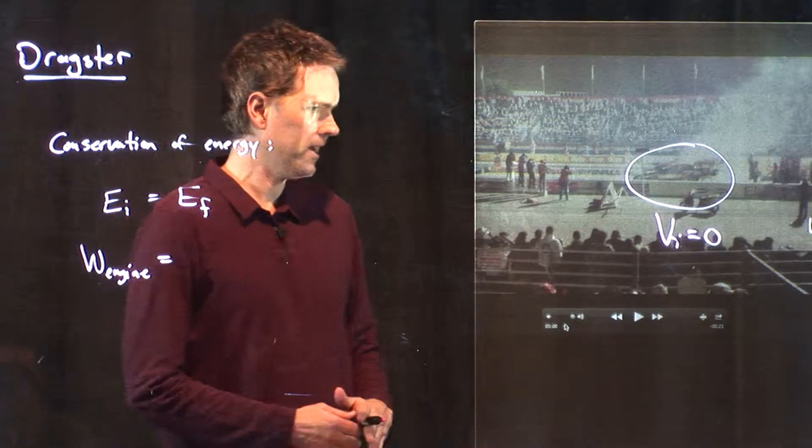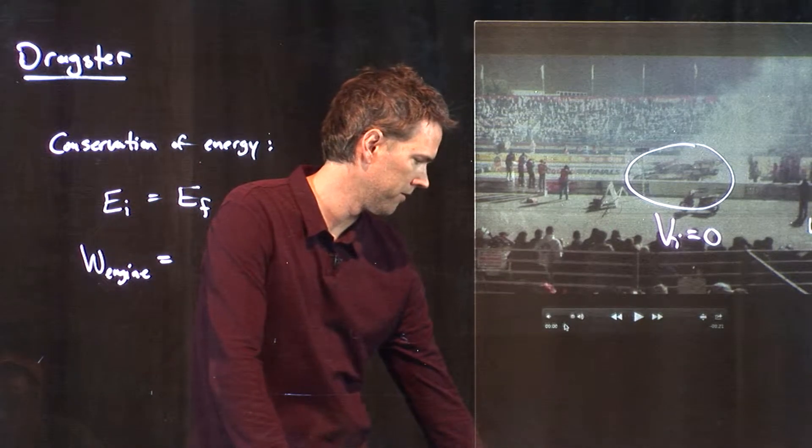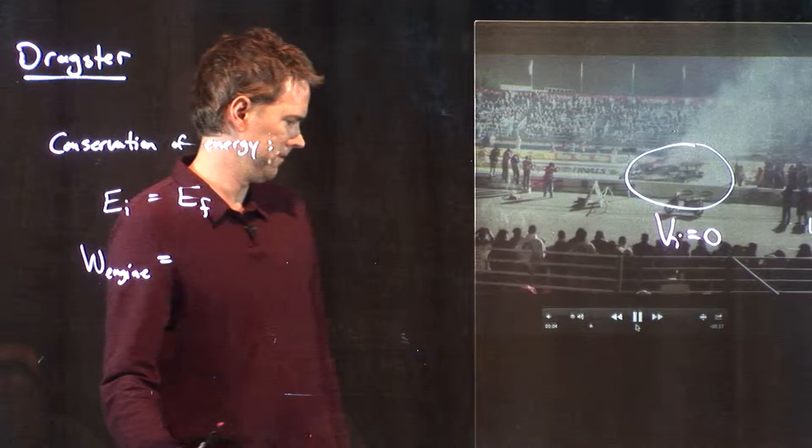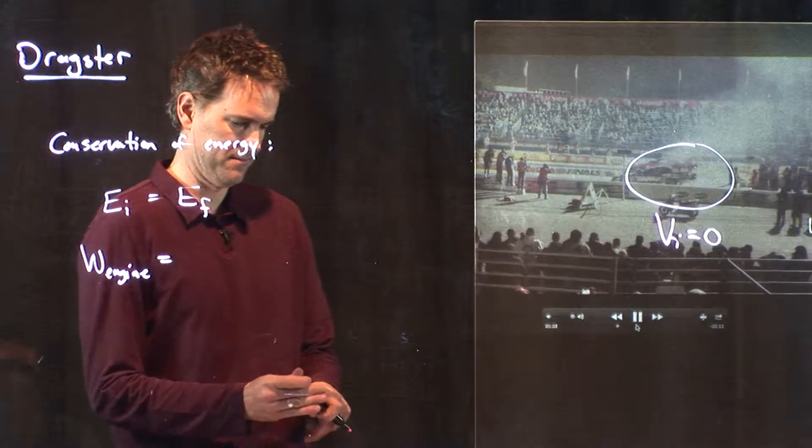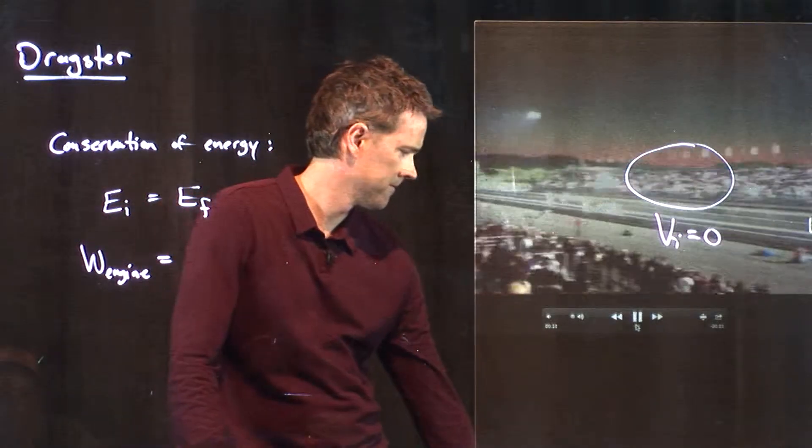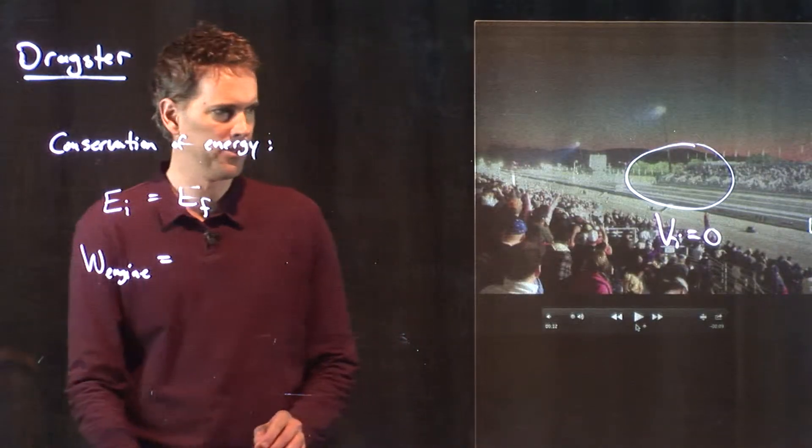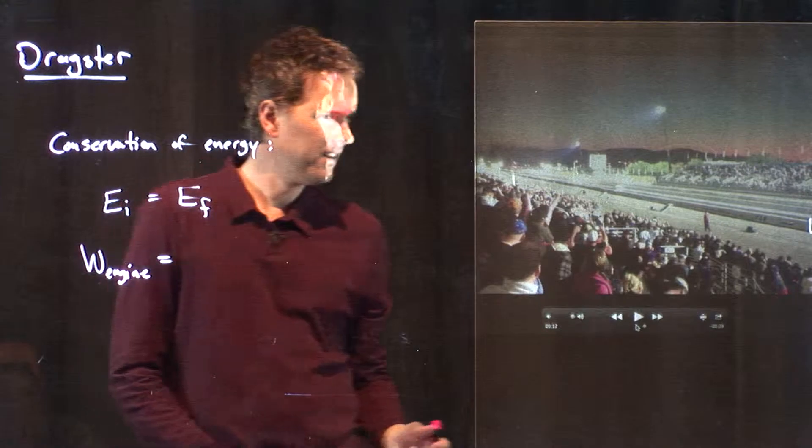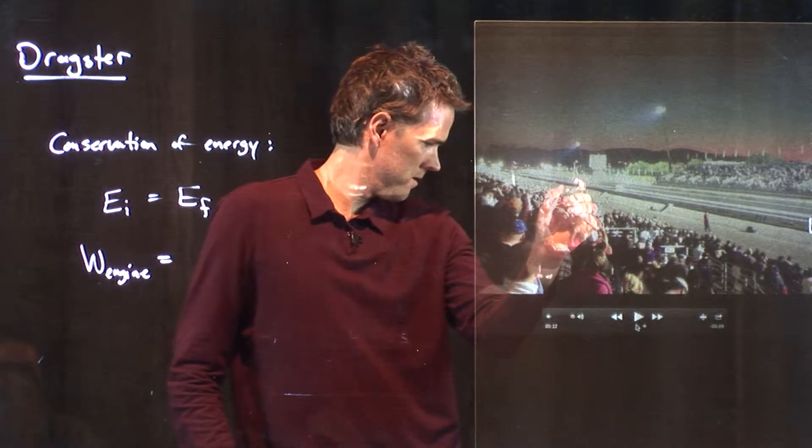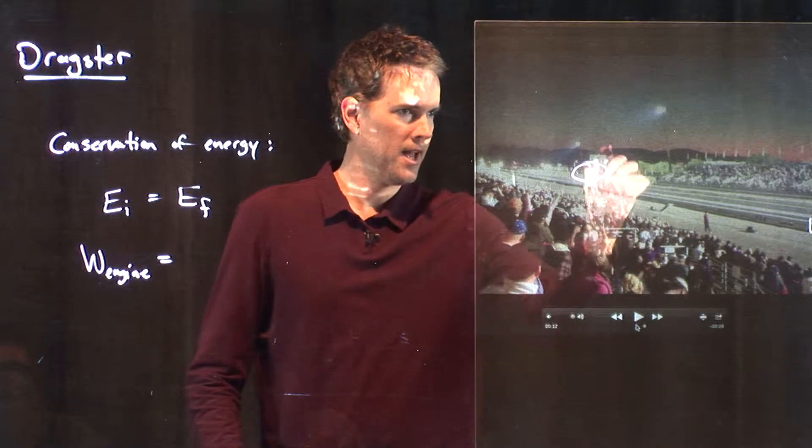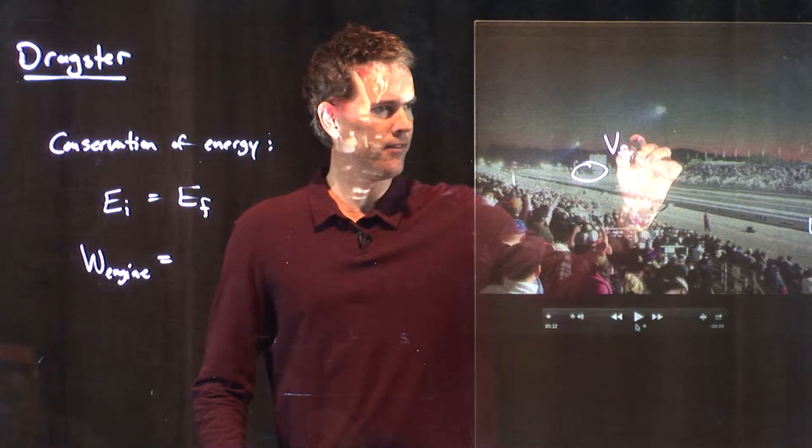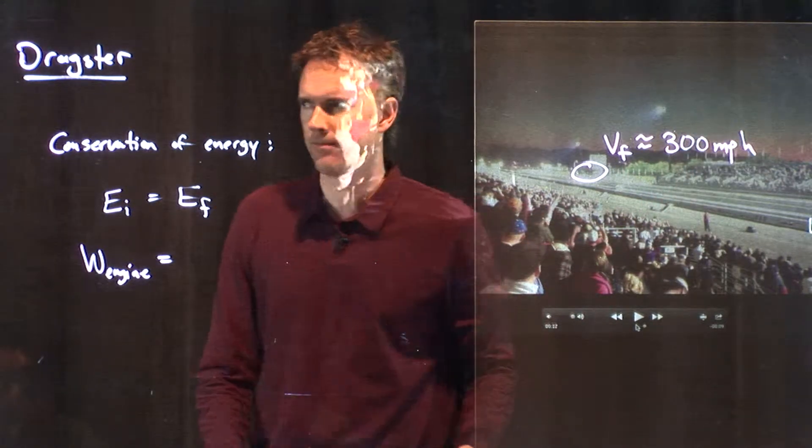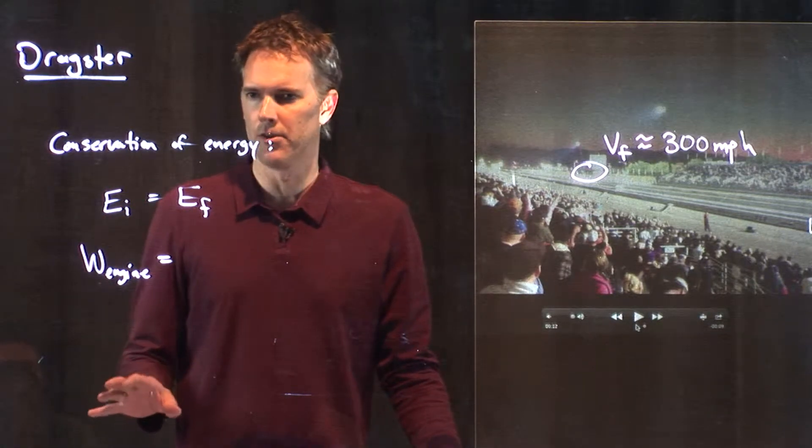And now, at the final picture, let's see if we can scroll through this to the final picture. Right about there. But here is the dragster. And it is going at some VF that is approximately 300 miles per hour. That's the final speed of the dragster.